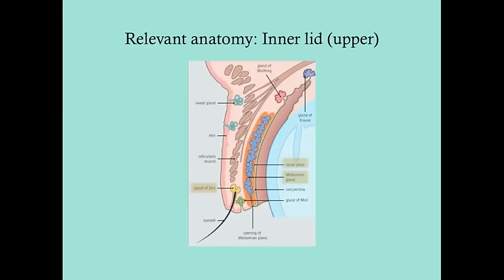Looking at the inner lid in a sagittal plane, you've got the tarsal plate — that connective tissue. Within the tarsal plate you have the meibomian glands. The meibomian gland is a sebaceous gland and it secretes a lipid-rich fluid that's partially responsible for lubricating the eye. And then the Zeiss gland, which is at the base of the eyelashes, is more external on the eyelid.